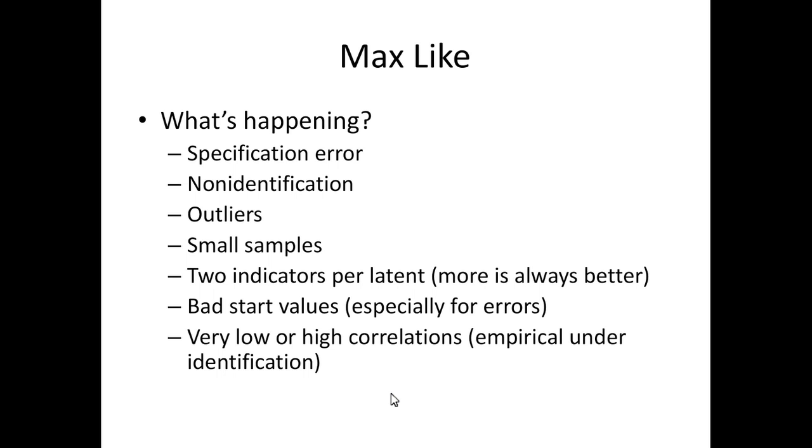Small samples are very problematic. You will get more Haywood or inadmissible solutions with small samples. Anytime you have a latent variable, so circle, with only two indicators, you should never have a latent variable with only one indicator because then you've essentially just had a square that you were pretending to make a bubble. So all latent variables need to have at least two indicators, but really two is not quite enough. You always need more.